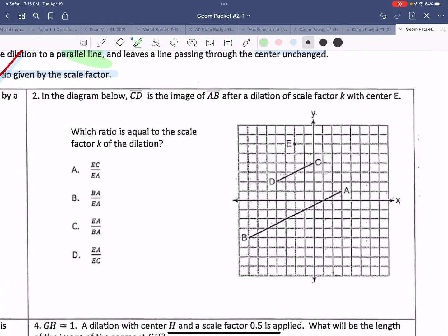Question number two. In the diagram below, CD is the image. So this is our image. And AB is after we dilated it. What would be the scale factor if the center was E? Okay. So again, if we start here, this distance was doubled. So this was 2, 2. Now it's 3, 3. Make sense? Here, I went over 2, 4. Now I went over 3, 5.